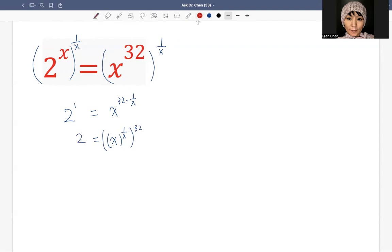So now, we can raise both sides by, because we want to associate the number with numbers, we would raise both sides by 1 over 32 to get rid of this 32 on the right hand side. Because 32 times 1 over 32, that's 1. So we have x raised by 1 over x on the right hand side.